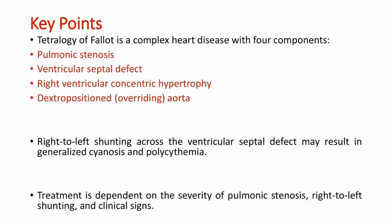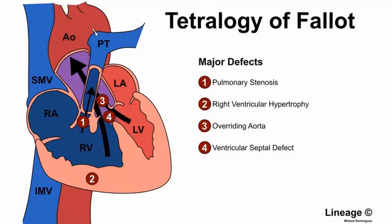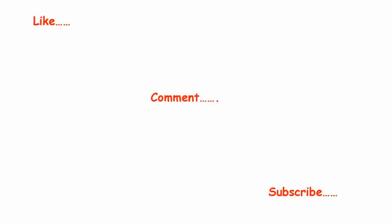Let's see the key points once again. Tetralogy of Fallot is a complex heart disease with four components: pulmonic stenosis, ventricular septal defect, right ventricular concentric hypertrophy, and extra-positioned or overriding aorta. Right-to-left shunting across the ventricular septal defect may result in generalized cyanosis and polycythemia. Treatment is dependent on the severity of pulmonic stenosis, right-to-left shunting, and clinical signs. If you find the video useful, please like it, share it with your friends, and comment your suggestions. Please subscribe and click the notification bell so you get notified every time a video is uploaded.